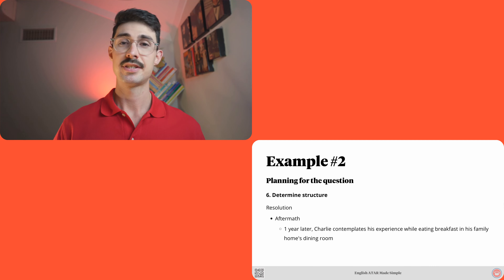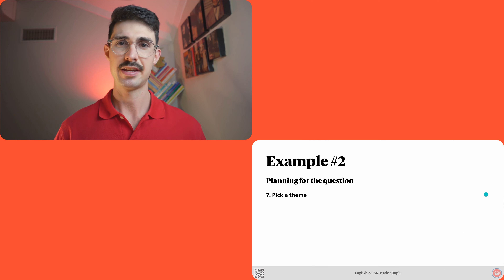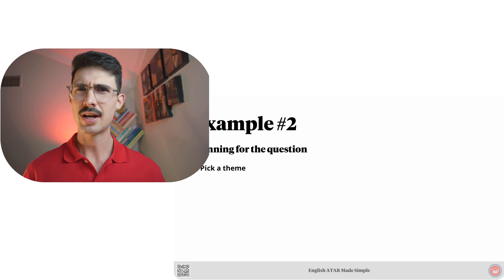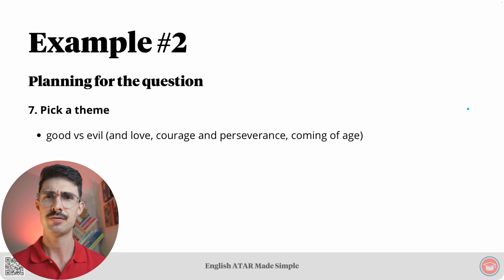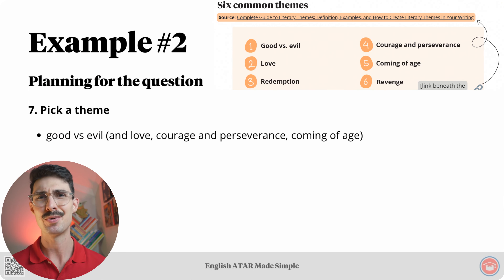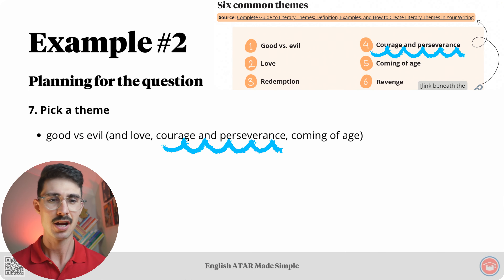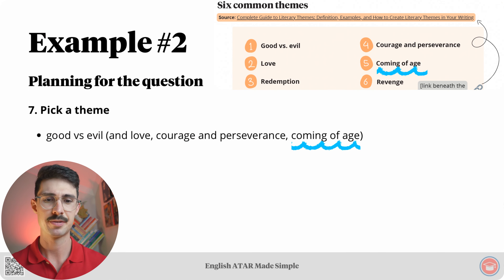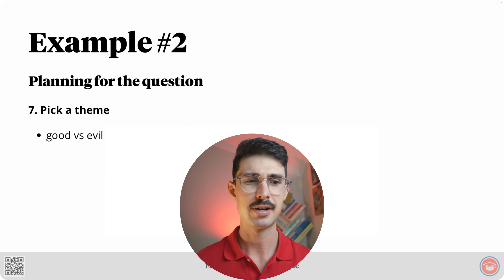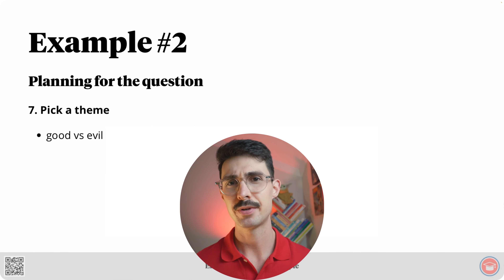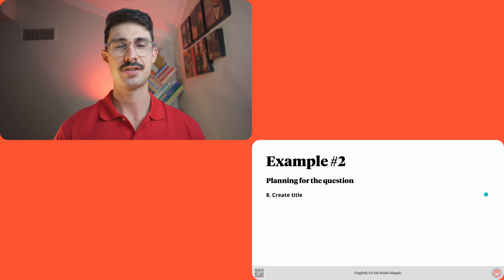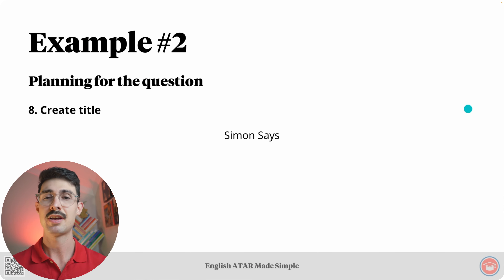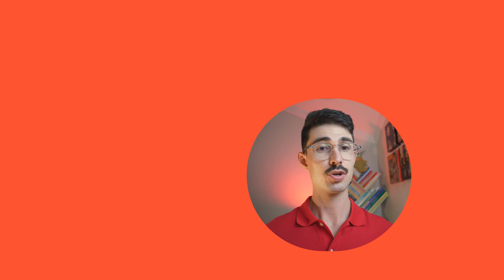Step seven, pick a theme: good versus evil, and also love, courage, perseverance, and coming of age — but mainly the first one. Step eight, create title: my title is 'Simon Says.'